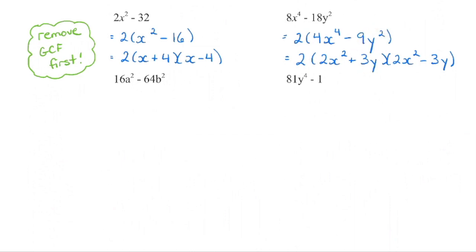Keep checking whether we can factor further. This does not factor further because even though we are subtracting, these are not perfect squares, nor is that 2. So this particular polynomial has three factors in the final answer. The other one also has three factors in the final answer.